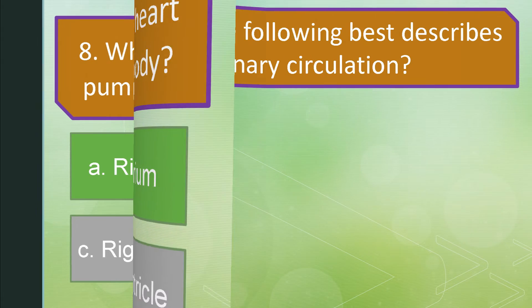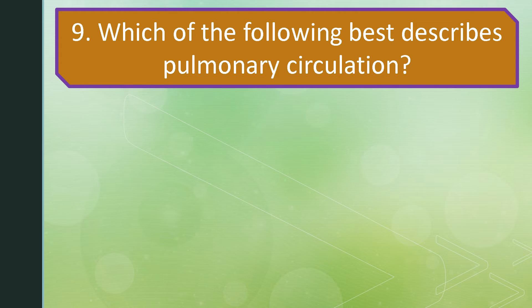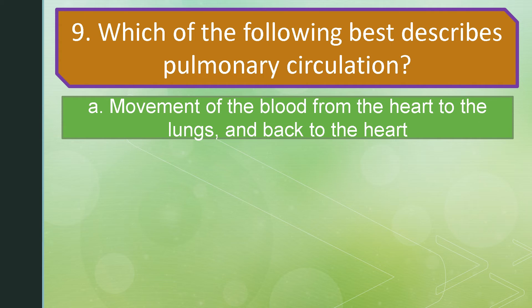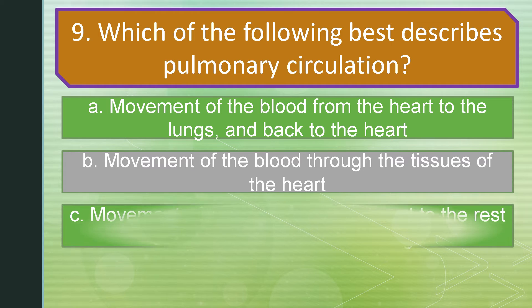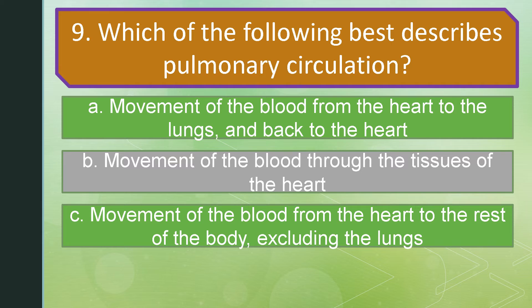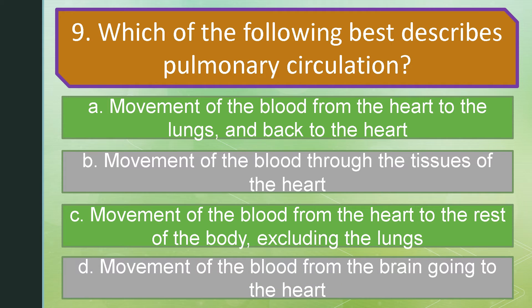For number nine. Which of the following best describes pulmonary circulation? Is it A: Movement of blood from the heart to the lungs and back to the heart? Letter B: Movement of blood through the tissues of the heart. Letter C: Movement of blood from the heart to the rest of the body excluding the lungs. Or letter D: Movement of blood from the brain going to the heart. The correct answer is letter A: Movement of blood from the heart to the lungs and back to the heart.